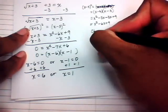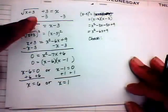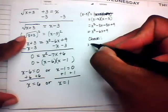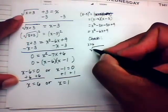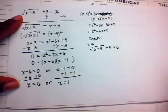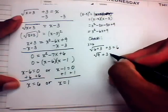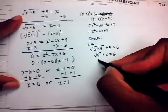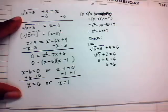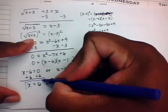Now we perform the all-important check using the original equation. For x = 6: √(6 + 3) + 3 = √9 + 3 = 3 + 3 = 6. That equals 6 — a true statement. So x = 6 is a solution.